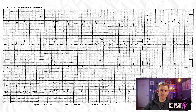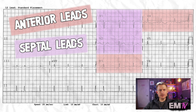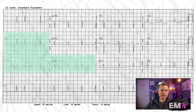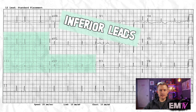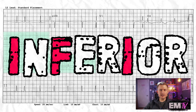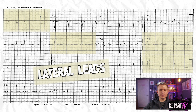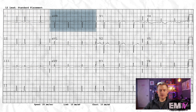So just to recap: V1 through V4 are my anterior leads, with V1 and V2 being further subdivided into the septal grouping — I look at these first because they're the top four reasons you're going to die. I then head over to the 2, 3, and AVF inferior lead groupings, because the word 'inferior' has multiple I's and an F. And then I'm left with my lateral leads — 1, AVL, V5, and V6. For the purposes of STEMI recognition, generally we don't pay too much attention to AVR.